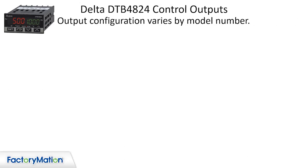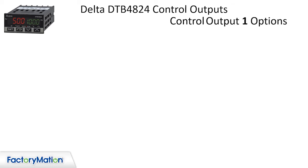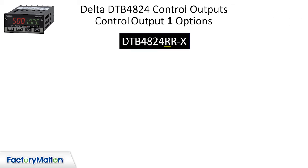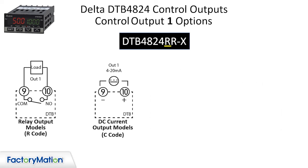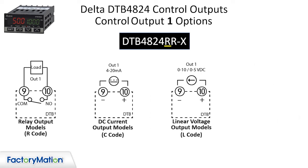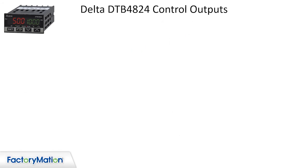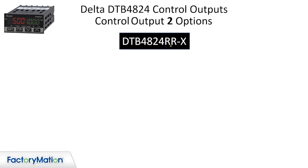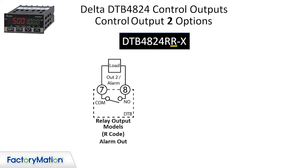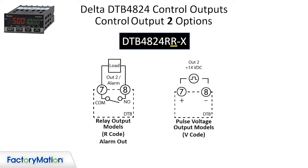Output configuration varies by model number. The first alpha character in the part number designates output number 1, which can be a relay, analog current, analog voltage, or a DC-pulsed output to drive a solid-state relay. Output 2 is the second alpha character, with a relay option that can be used as a control output or an alarm output contact. A solid-state relay driver is also available.